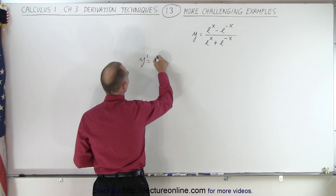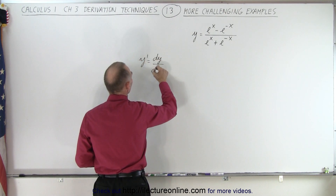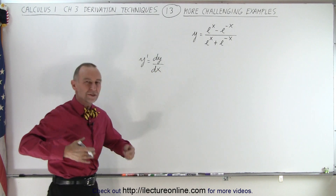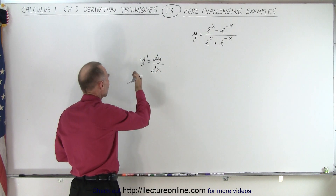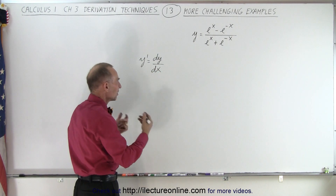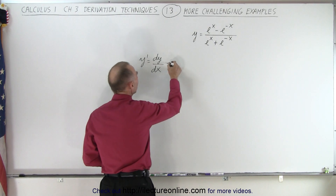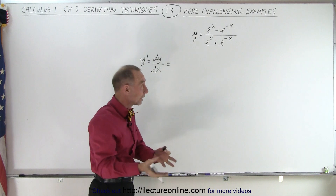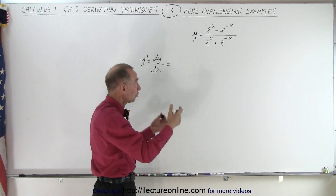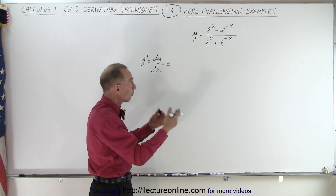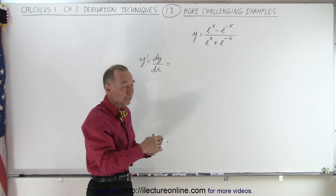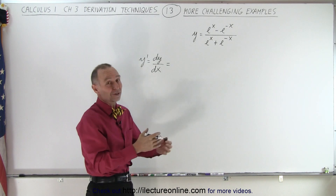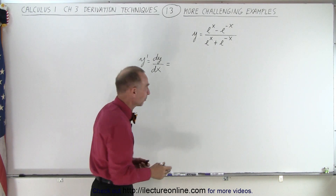So y prime is equal to dy/dx. I always write it like this so you feel comfortable — you can write it as y prime or as dy/dx; it means exactly the same thing. Now we take the denominator. The quotient rule is: you take the denominator times the derivative of the numerator, minus the numerator times the derivative of the denominator, all over the denominator squared. If you say that to yourself a hundred times, you will have memorized that rule.